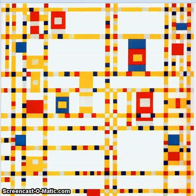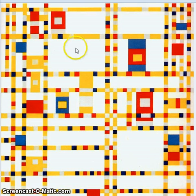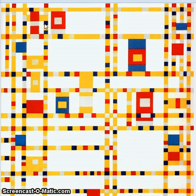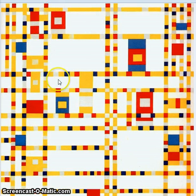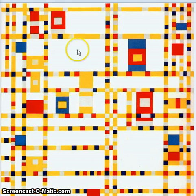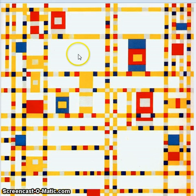One of the first things I want to talk about is the color use. What colors do you see that Piet Mondrian uses? We have a white background. We have red, yellow, and blue. Those three colors — red, yellow, and blue — they are primary colors. Primary means that no two colors can make up that color. No two colors can make up red, blue, or yellow.